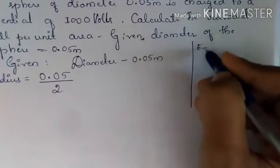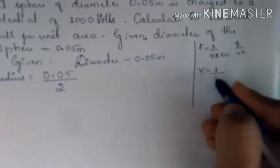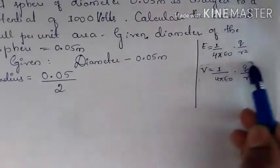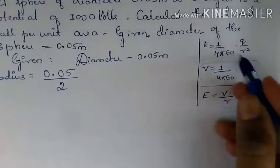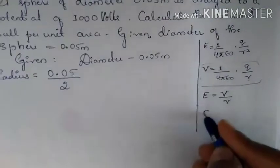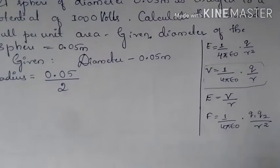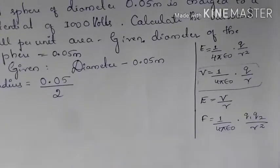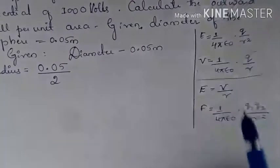So E = V/R. Similarly, Coulomb's law gives the force as 1/(4πε₀) × q₁q₂/R². From this force we derive the electric field, and from the electric field we write the potential. So the relevant formula here is E = V/R.